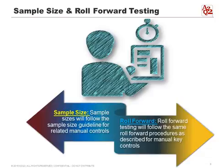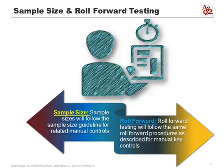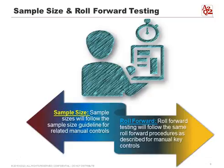For sample size and roll-forward testing, because spreadsheets are so manual and people-dependent, they follow the same sample size guidelines as manual controls. In a high-risk process like order-to-cash or financial close, some auditors require 25 to 45 samples, and we may need to review the spreadsheets related to those transactions. For roll-forward testing, we follow the same roll-forward procedures as manual key controls, since spreadsheets are people-dependent and treated as manual controls.